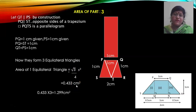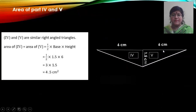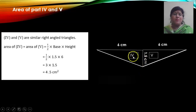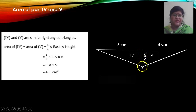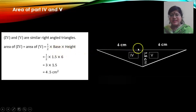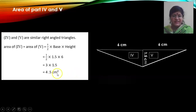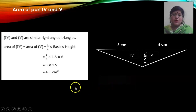Let us now move to the fourth and fifth parts of the plane — the wings. The wings are in the form of right angle triangles. The base is 6 cm and the height is 1.5 cm. Area of a right angle triangle = (1/2) × base × height = (1/2) × 6 × 1.5 = 4.5 cm². Since parts 4 and 5 are identical, multiplying by 2 gives a total area of 9 cm².